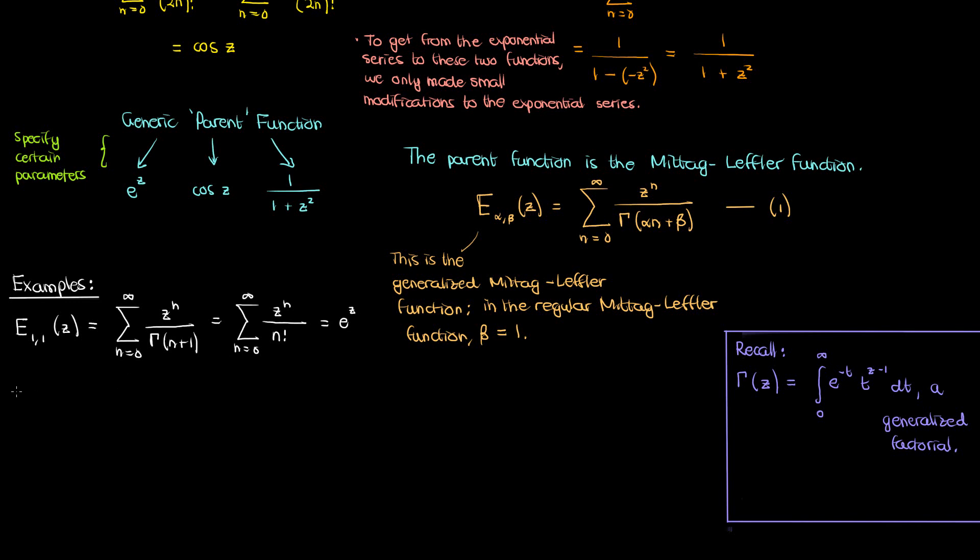Let's look at another example, the Mittag-Leffler function of negative z squared for alpha 2 and beta 1. If we convert the gamma function to a factorial we get 2n factorial in the denominator, and if we simplify the numerator a bit we get negative 1 to the n times z to the power 2n, and if you again look back up this is just the infinite series of cosine z.